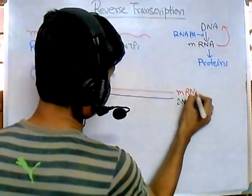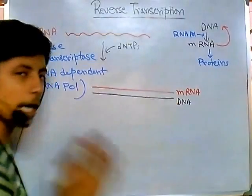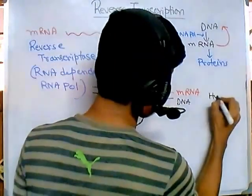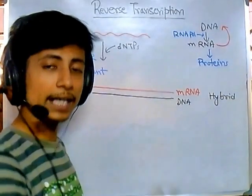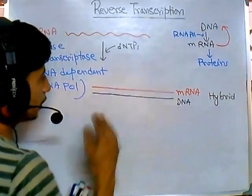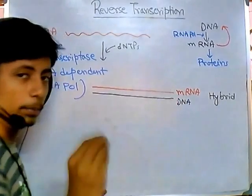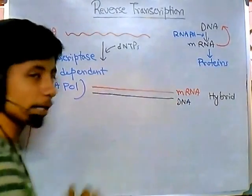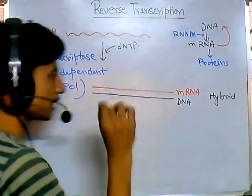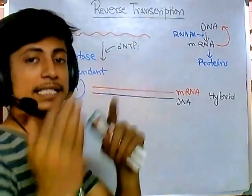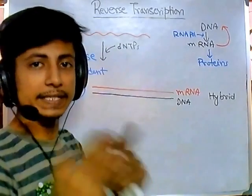Once the DNA strand is produced, we have an mRNA-DNA hybrid. This hybrid is not stable because it contains deoxyribonucleotides paired with ribonucleotides. So in most cases, we need to degrade this RNA to get a complete single-stranded DNA. The single-stranded DNA produced after cleaving the mRNA is termed cDNA, or complementary DNA.